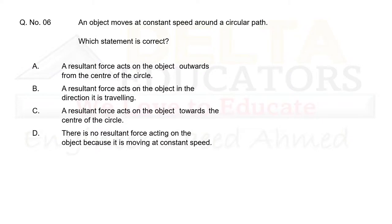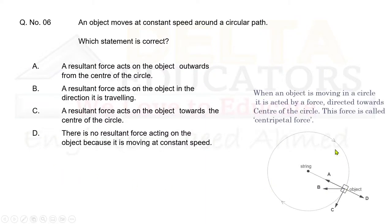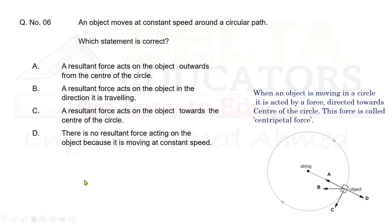Question 6: An object moves at constant speed around a circular path. Which statement is correct? Option A says the resultant force acts outwards from the centre — incorrect, the force is directed towards the centre. Option B says the force acts in the direction of travel — also incorrect. Option C says the resultant force acts towards the centre of the circle — correct. Correct option is C.